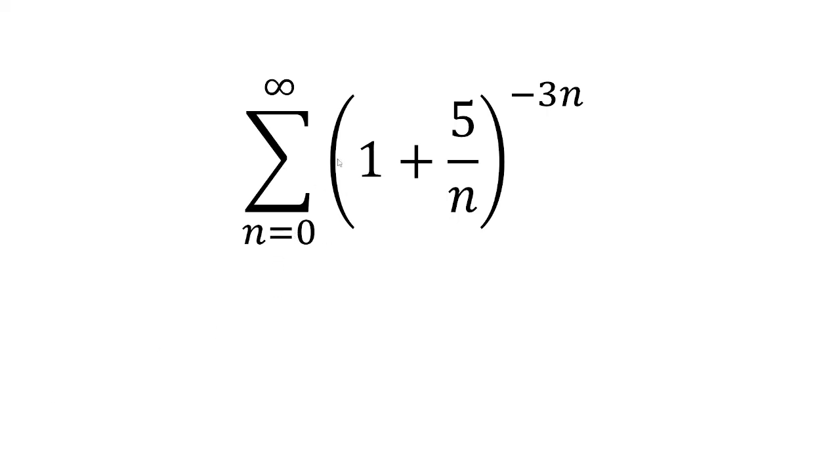We're given the sum from n equals 0 to infinity of (1 plus 5 over n) raised to the negative 3n power. We want to see if the series converges or diverges.